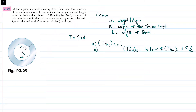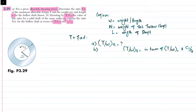Welcome back. Problem 3.29. In part A, for a given allowable shearing stress, determine the ratio T over w of maximum allowable torque T and weight per unit length w for the hollow shaft shown. In part B, denoting T over w naught as the value of this ratio for a solid shaft of same radius c2, express the ratio T over w for the hollow shaft in terms of T over w naught and c1 over c2.